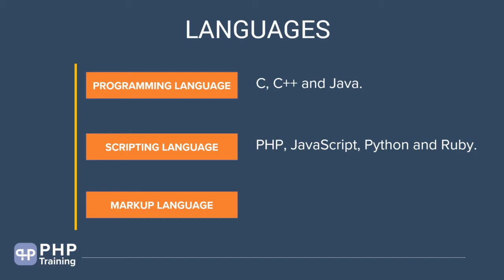PHP is a scripting language that runs on the server. If you want to run a program on the server side, you write PHP. If you want to run a program on the client side, you use JavaScript. Ruby runs on the server side, and Python can also be written on the server side. Ruby and Python can do many more things than just running on the server side — you can write desktop applications as well. But remember, scripting languages are built on top of other programming languages.